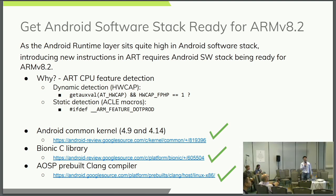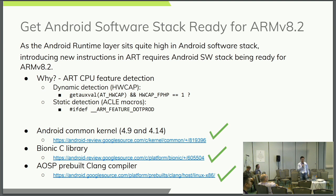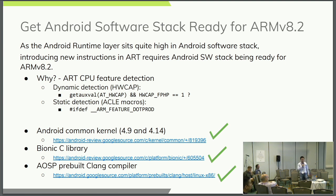Because the Android Runtime sits quite high in the Android software stack, in order to actually use those ARMv8.x features, we need to get the whole Android software stack ready for the new instructions. One of the most important requirements is feature detection support. Currently in Android Runtime, there are two ways to do CPU feature detection. The dynamic approach uses the AUX vector via a hardware capability query. The static approach depends on the Clang compiler to give us the C macro definitions, so we know we're compiling for certain targets that support certain features.